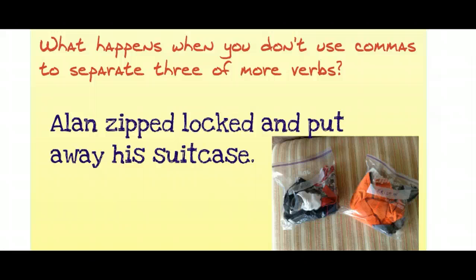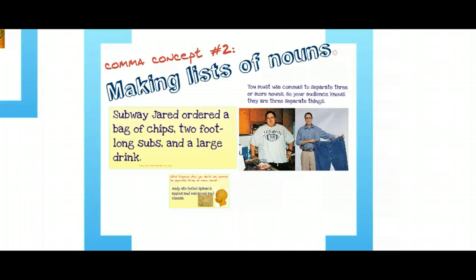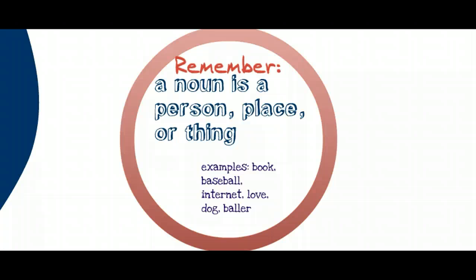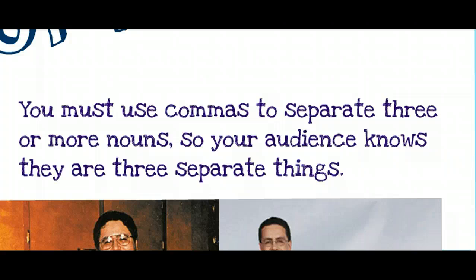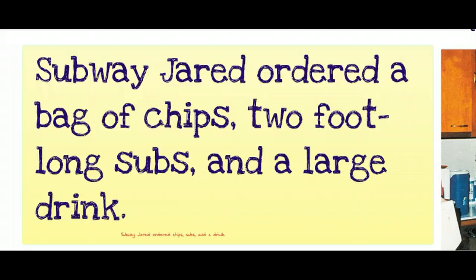Here's comma concept number two: how do we make lists out of nouns? A noun is a person, place, or thing — something like a book, baseball, internet, love, or dog. The rule: you need to use commas to separate three or more nouns so your audience knows these are three separate things. You don't want your ideas to run together. For example: 'Subway Jared ordered a bag of chips, two foot-long subs, and a large drink.'